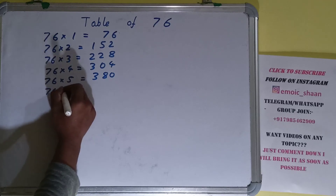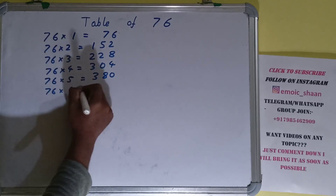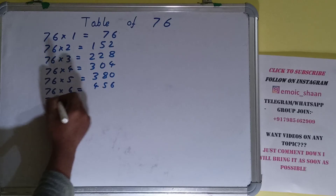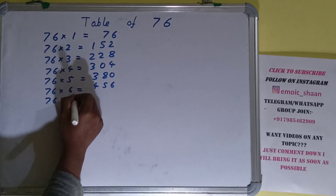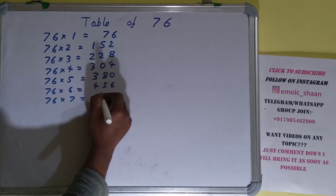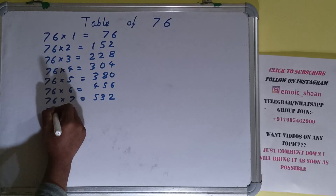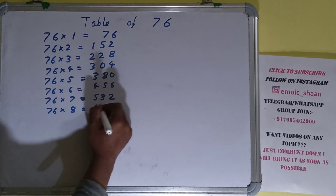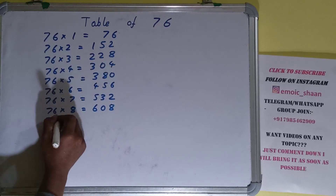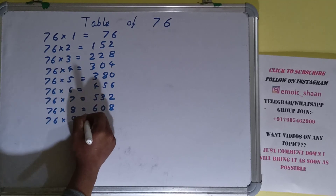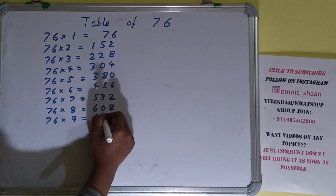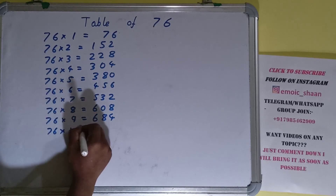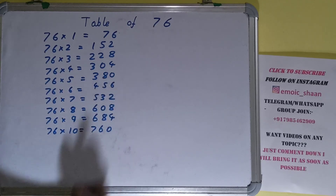76 into 6 is 456. 76 into 7 is 532. 76 into 8 is 608. 76 into 9 is 684. And 76 into 10 is 760.